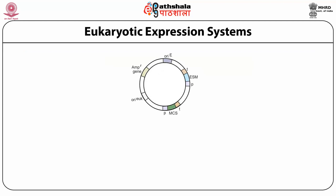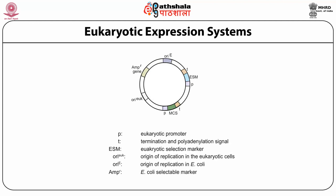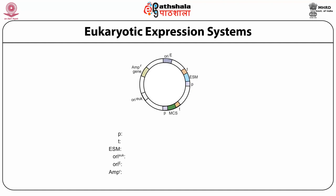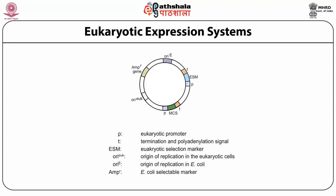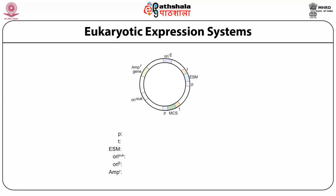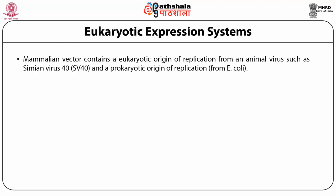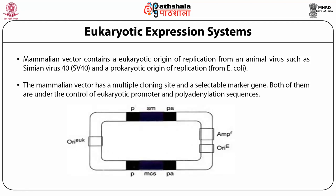Eukaryotic expression systems include prokaryotic promoters, termination and polyadenylation signals, eukaryotic selection markers, origin of replication in eukaryotic cells, and E. coli selectable markers. Mammalian vectors contain a eukaryotic origin of replication from an animal virus such as simian virus 40 and a prokaryotic origin of replication from E. coli. The mammalian vector has a multiple cloning site and a selectable marker gene, both under the control of eukaryotic promoter and polyadenylation sequences.